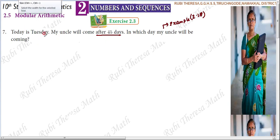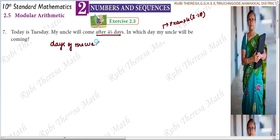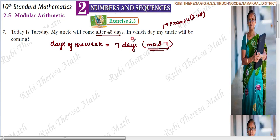Today is Tuesday. This problem is related to days of the week. How many days do we have in a week? 7 days. So what do we choose to decide? Mod 7.